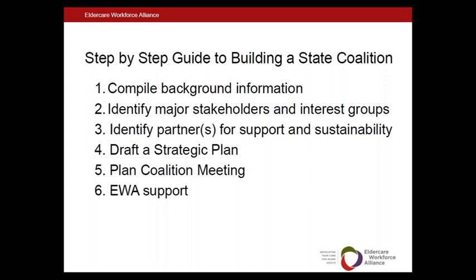Within the toolkit is a list of possible stakeholders. This list is not all-inclusive, and we encourage state coalitions to think outside the box when looking at interest groups and stakeholders. For example, many elder care groups already talk to each other, so you want to be looking for groups that care about these issues that may not be people you talk to on a regular basis — talking to workforce boards and community colleges, for instance, aren't necessarily where home and community-based care organizations typically look to collaborate, but these are important partners when looking at developing the workforce.